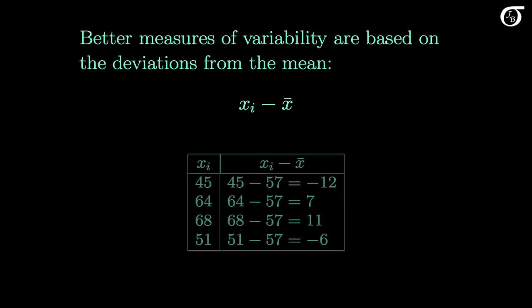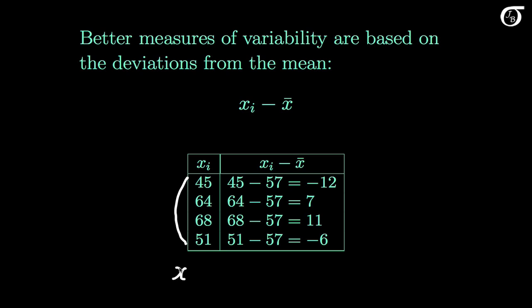Better measures of variability are based on the deviations from the mean. Every observation has a deviation associated with it. The deviation is simply the value of the observation minus the mean. For this sample of 4 observations, the mean x-bar is equal to 57. If we subtract the mean from each observation, we get these 4 deviations: −12, 7, 11, and −6.